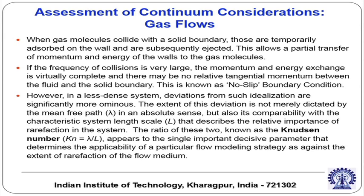However, if the frequency of collisions is not sufficiently large, this may not hold true. The issue of largeness or smallness of the frequency of collision is parameterized by the non-dimensional number called the Knudsen number. The Knudsen number is the ratio of the molecular mean free path with respect to the characteristic system length scale. If the Knudsen number gets larger, the molecules traverse a large distance before another collision — meaning on average the number of collisions is less.